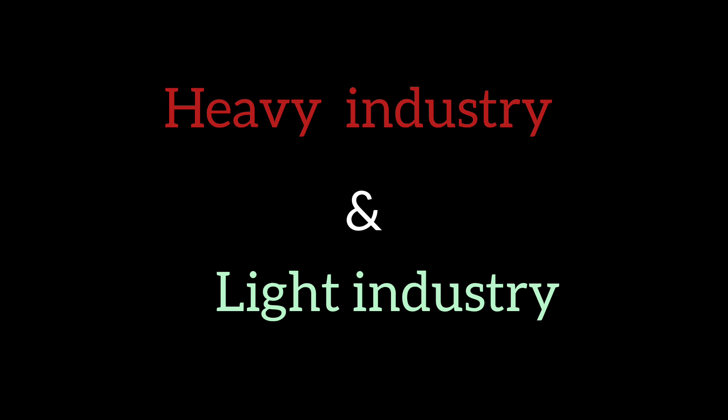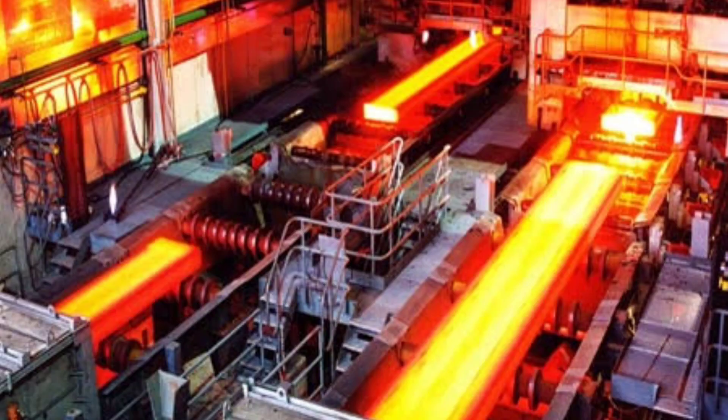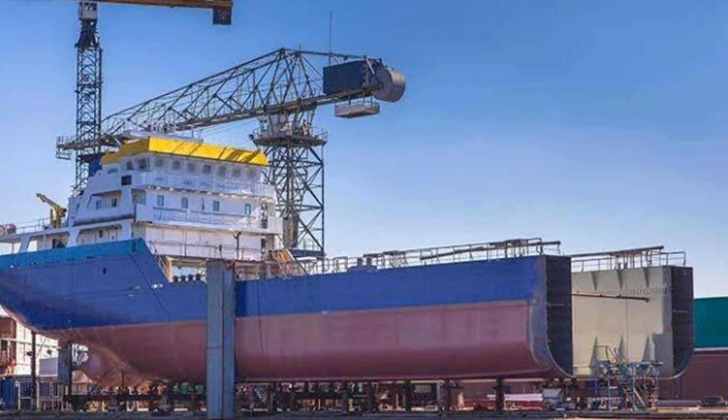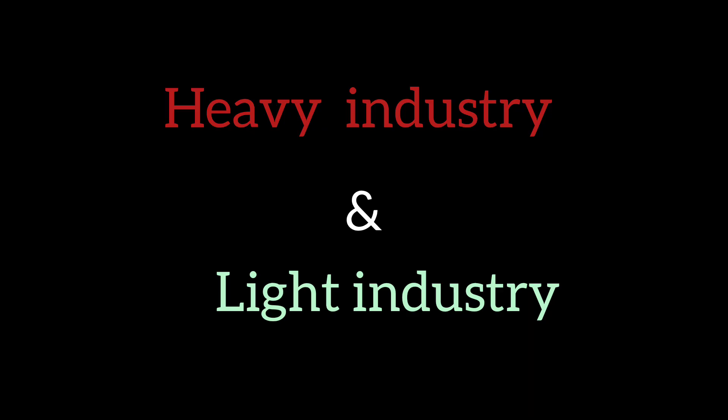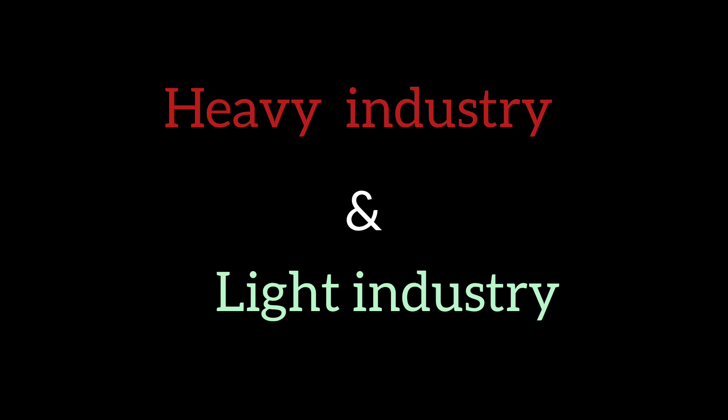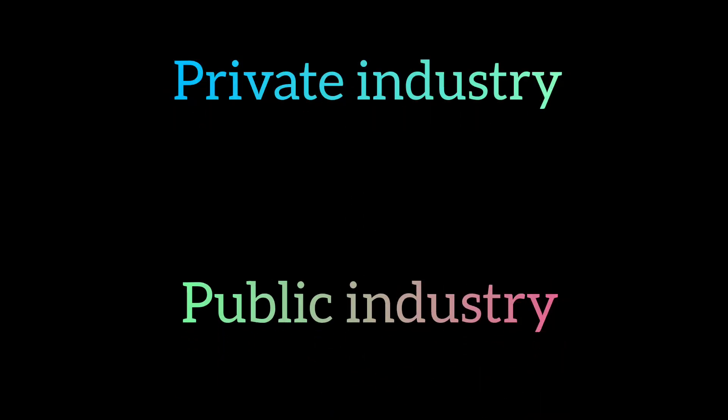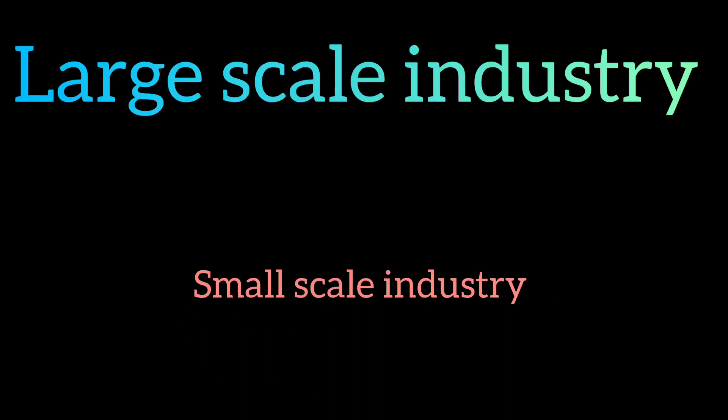Heavy industries include: aeronautics, iron and steel, shipbuilding, aluminum, and metal-related industries. Light industries involve assembling parts with smaller-scale production. There are also different types of industries such as private industry, public industry, and based on workforce: large industry and small industry.